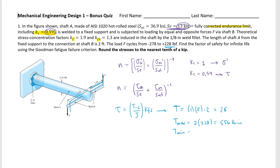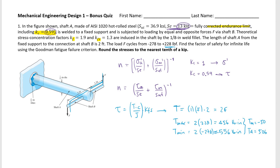The minimum torque is 2 times minus 272, giving minus 544 pound-inches. The mean torque is therefore minus 50 pound-inches, and the alternating torque is (456 + 544) divided by 2, which equals 500 pound-inches.